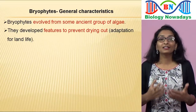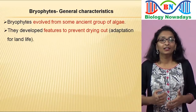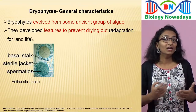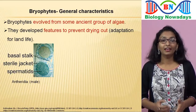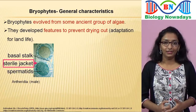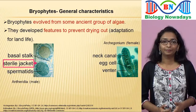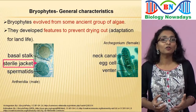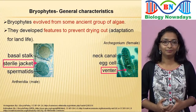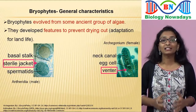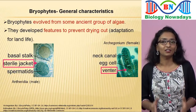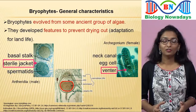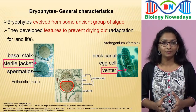One of these was the development of a sterile jacket layer around the male and female sex organs. The male sex organs are called antheridia (singular: antheridium). Antheridium produces the male gametes called sperms. The female sex organ is called archegonium, which produces the female gamete called the egg. The basal portion of the archegonium is called the venter and contains the egg cell. The venter has a few layers of sterile cells forming the sterile protective covering of the archegonium. Similarly, a sterile jacket layer is formed around the sporangium, which is the structure where spores are produced. The protective covering around the sporangium is called the calyptra.